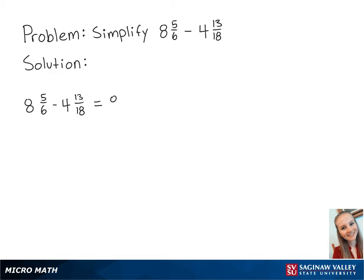So, 8 and 5 sixths is equal to 8 and 15 eighteenths, while 4 and 13 eighteenths will remain the same for now.